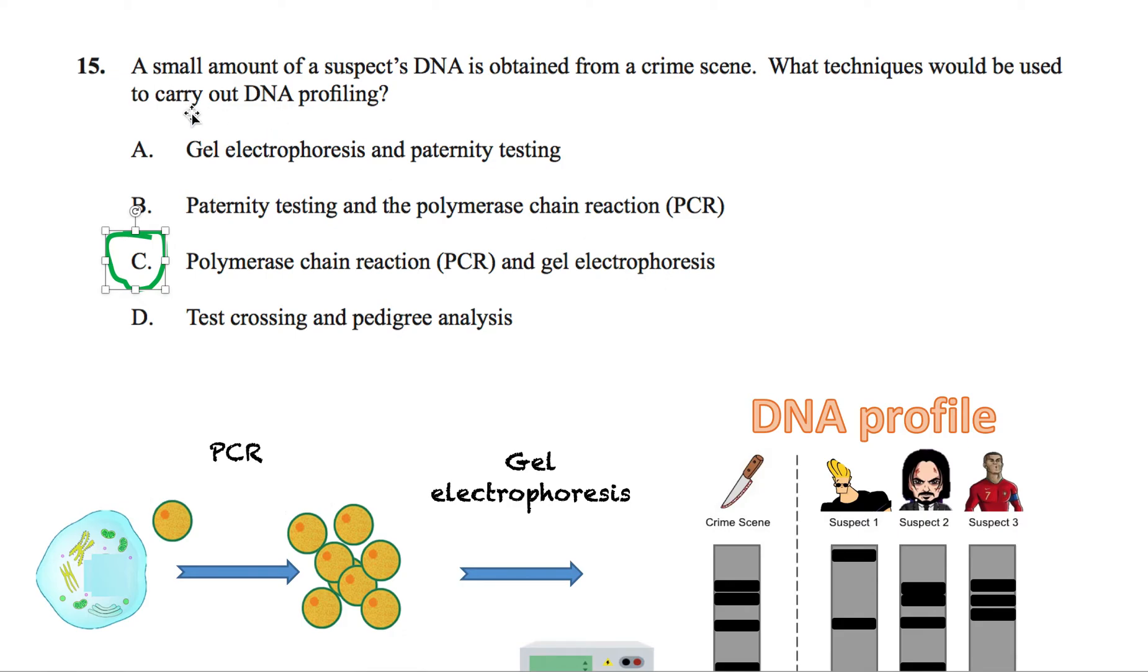But let's quickly eliminate why A, B, and D is incorrect. So we can see the first part of A is correct. Gel electrophoresis is used but paternity testing is not. So what is paternity testing?